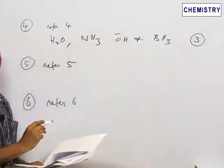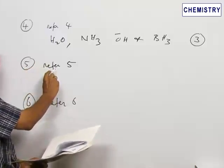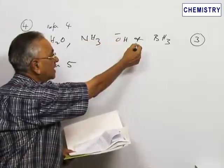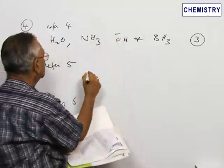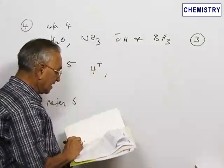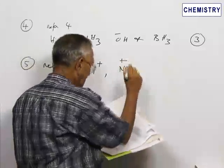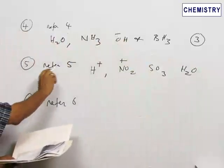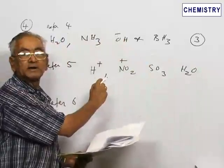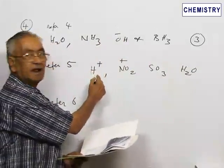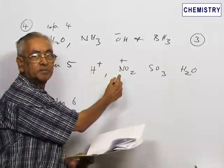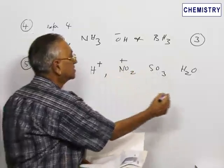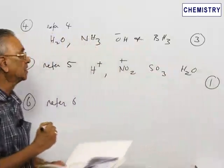Now refer to question number 5. This question asks: which among the following are electrophiles? Just like we identified nucleophiles, we can identify electrophiles. The species given are H⁺, NO₂⁺, SO₃, and H₂O. Electrophiles are electron-deficient species. H⁺ is an electrophile, the nitronium ion NO₂⁺ is an electrophile, and the sulfonating species SO₃ is also an electrophile. Therefore A, B, C are electrophiles, which corresponds to choice 1 in the options.